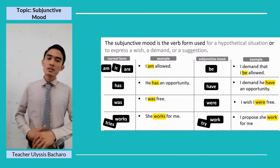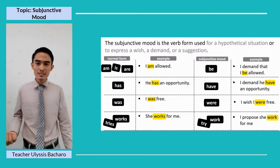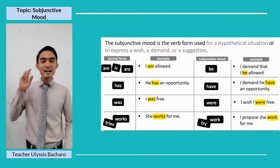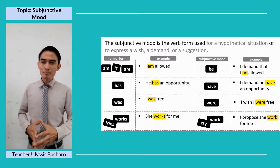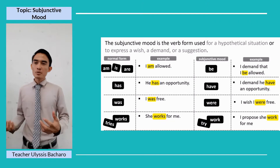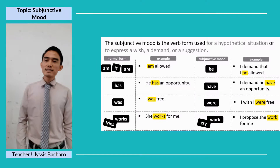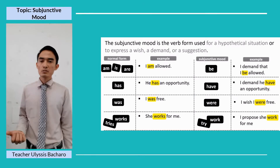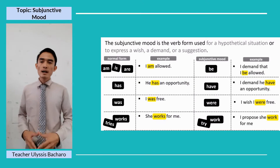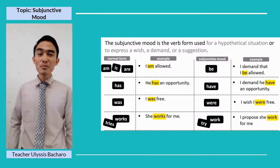'Has' becomes 'have.' Normally we use 'has' after a singular, like 'He has an opportunity.' But for a subjunctive mood demand: 'I demand he have an opportunity.' 'Was' becomes 'were.' Normally we say 'I was free,' but if it's a wish: 'I wish I were free.' And other verbs such as 'works' and 'tries' — normally 'She works for me,' but in subjunctive mood: 'I propose she work for me,' instead of 'works.'